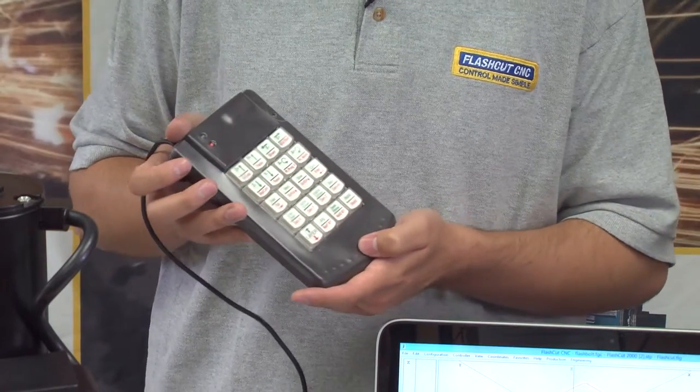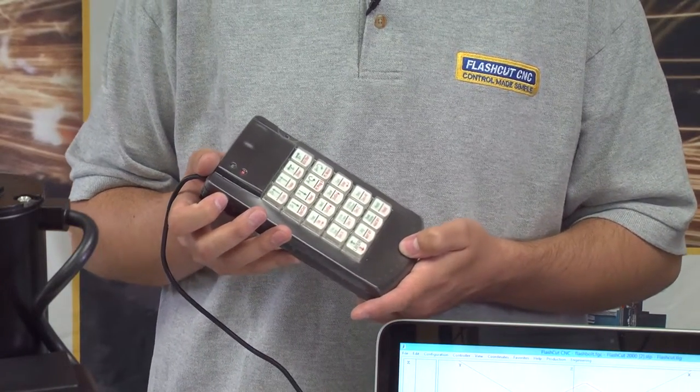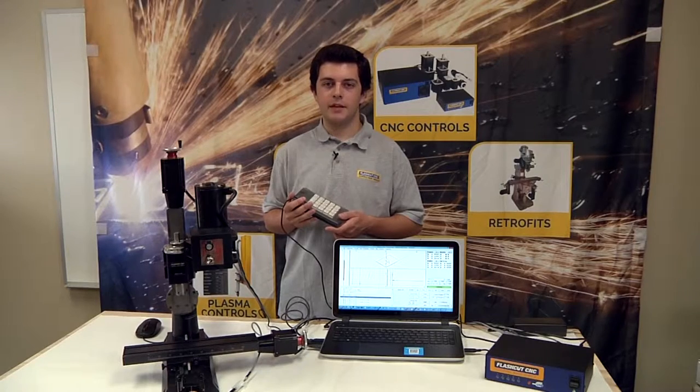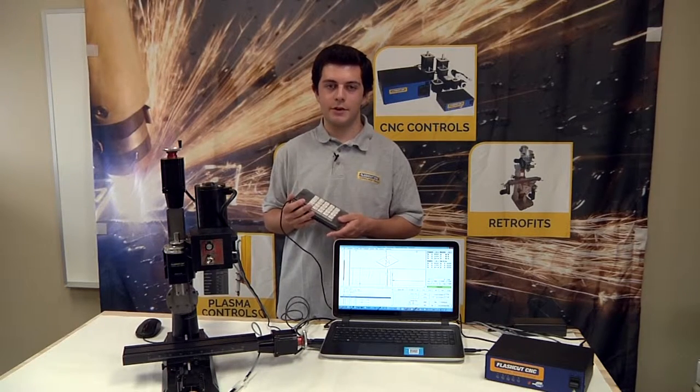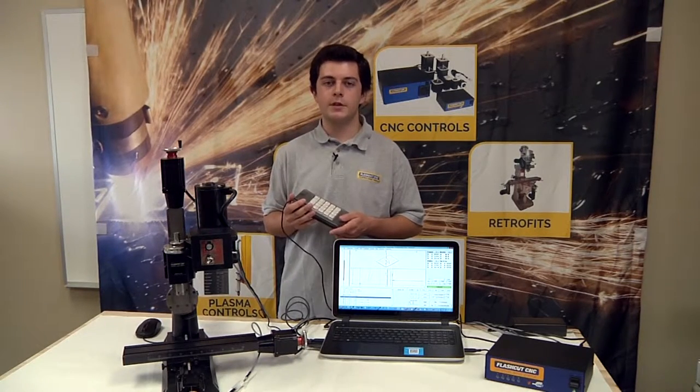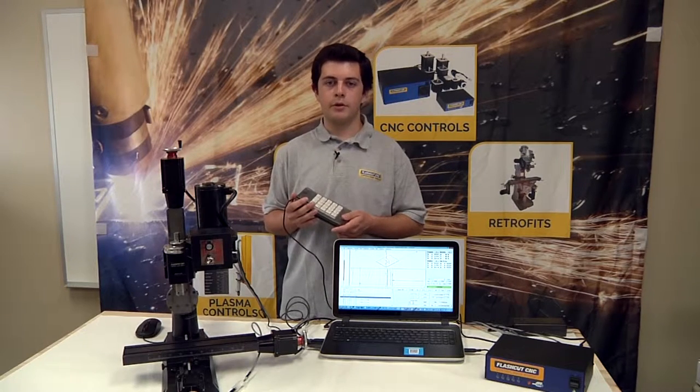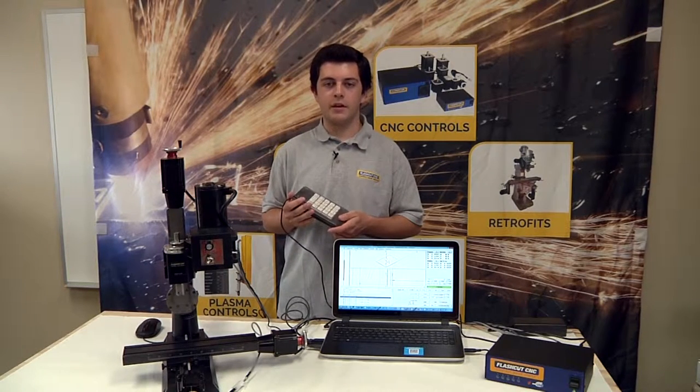This 38 function pendant allows you to control your machine from wherever you need to be. It is specially programmed to take advantage of commonly used functions in FlashCut such as jogging, point moves, setting zero, controlling your program, homing and turning on and off your spindle.